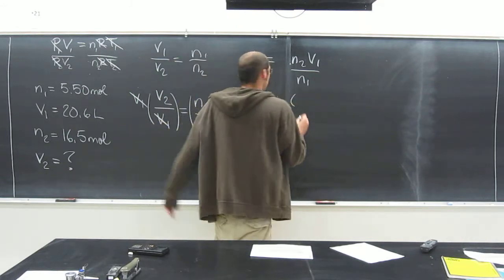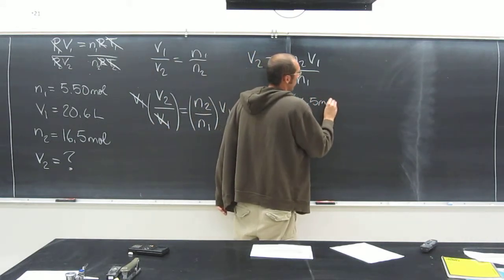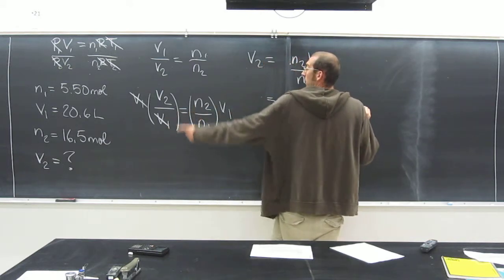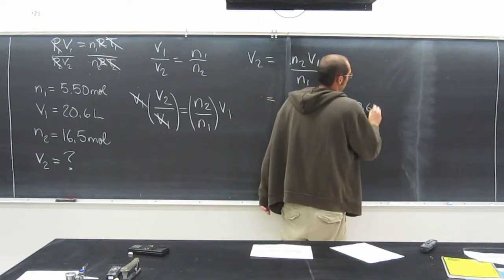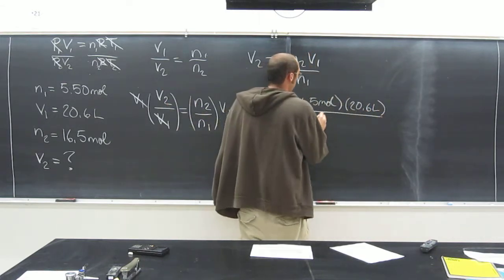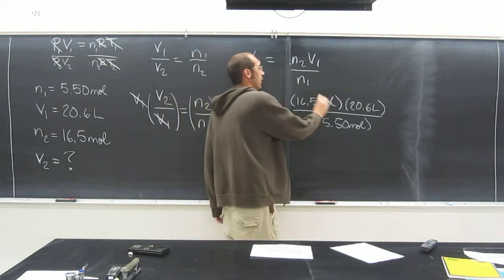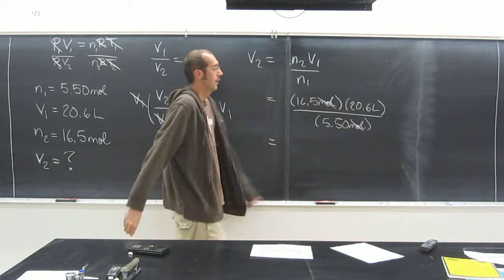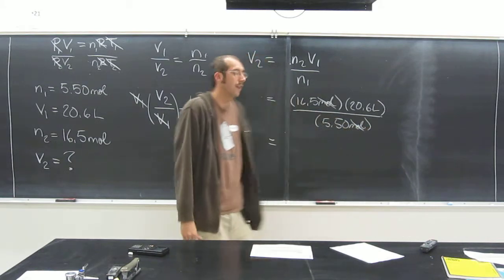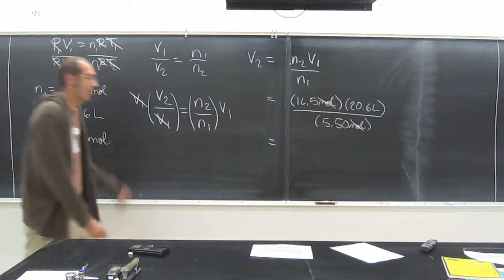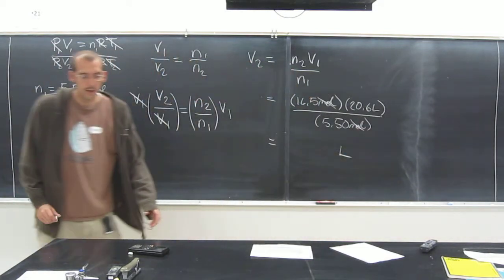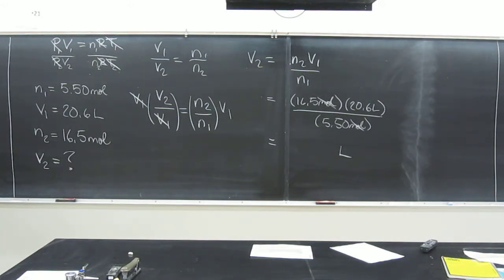Plug it in. So N2, 16.5 moles, V1, 20.6 liters divided by N1, 5.50 moles. Cool thing about it, doing it this way, is you can cancel out your units. And you're going to get units of liters, of course. And is liters good units per volume? Yes. It's great volume units. Okay, so all we've got to do is plug into our calculator now. So 16.5 times 20.6 divided by 5.5. And so what did you guys get?